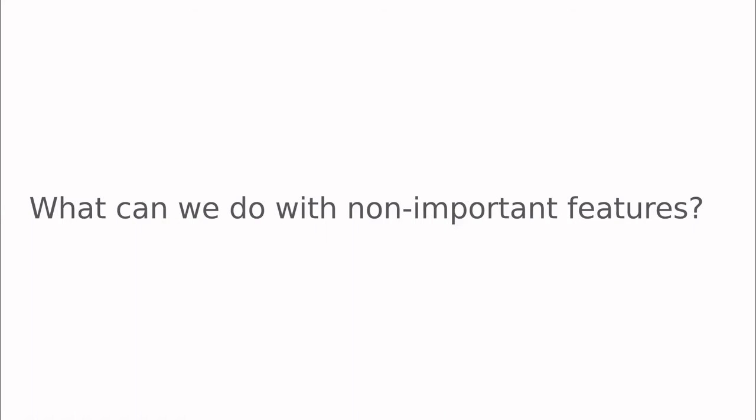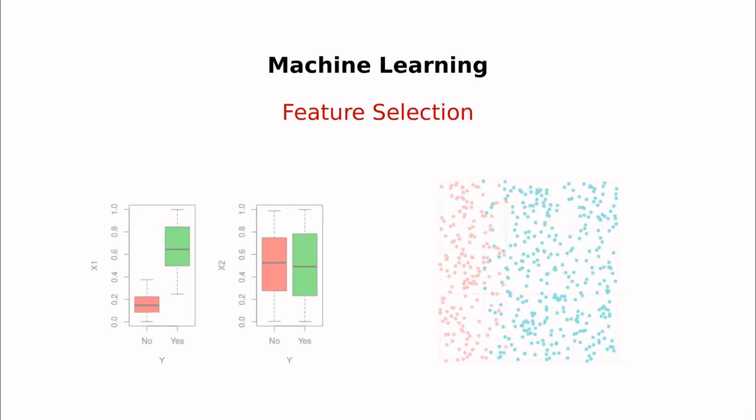Hi there! In the last video we finished with this question in mind: what can we do with non-important features? Today I'm going to talk about feature selection, or better say automatic feature selection. Let me summarize the main ideas, and this is going to be really useful for you.